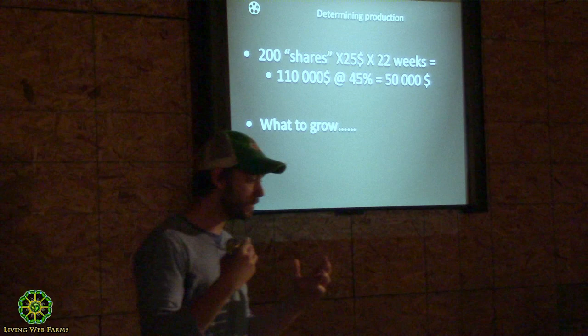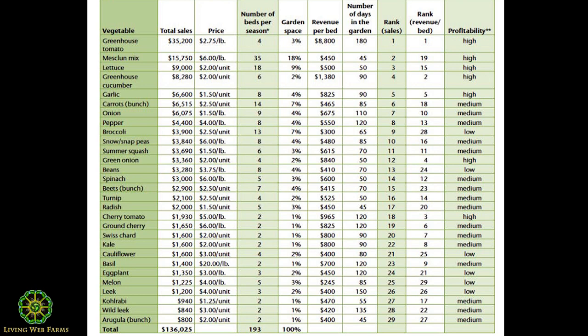Before you go further, ask yourself: am I growing everything? Am I growing 58 crops, or in my second or third season am I doing 15 crops and buying certain others from experienced growers to add to my offer? You need to ask these questions because each crop is a learning curve, and before you master all of them it can take quite a few years. It's better to start with less diversity and add new crops every year.